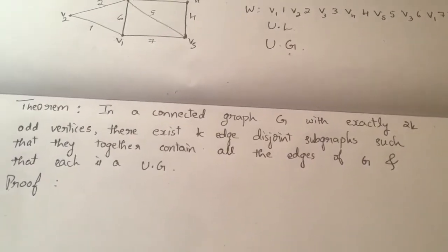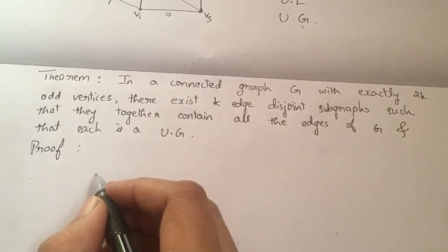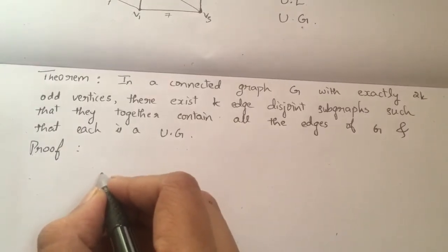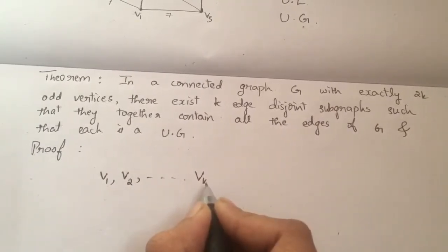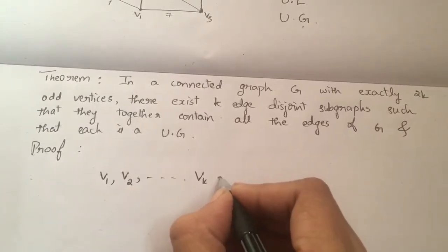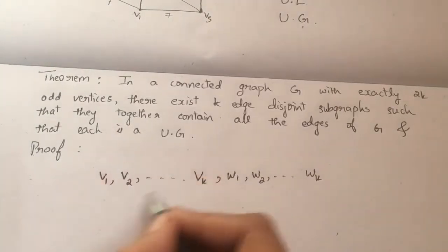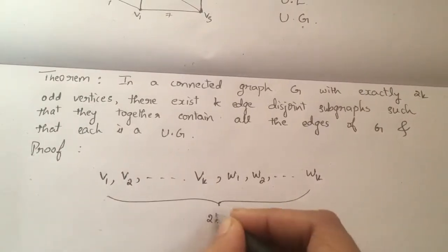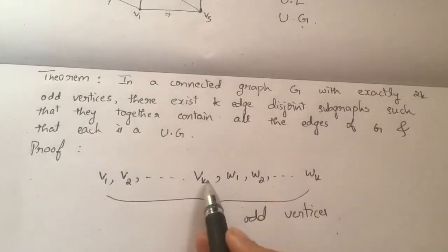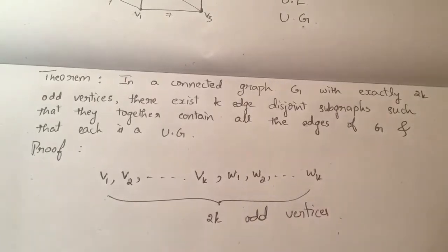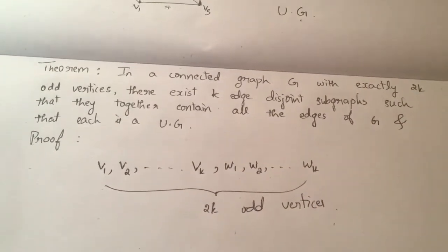So what I do is: let me name the odd vertices. I have got 2k odd vertices for graph G. I will name k of them v1, v2, ... , vk, and the other k as w1, w2, ... , wk. So in total I have got 2k odd vertices. I use this notation for ease in the further steps.